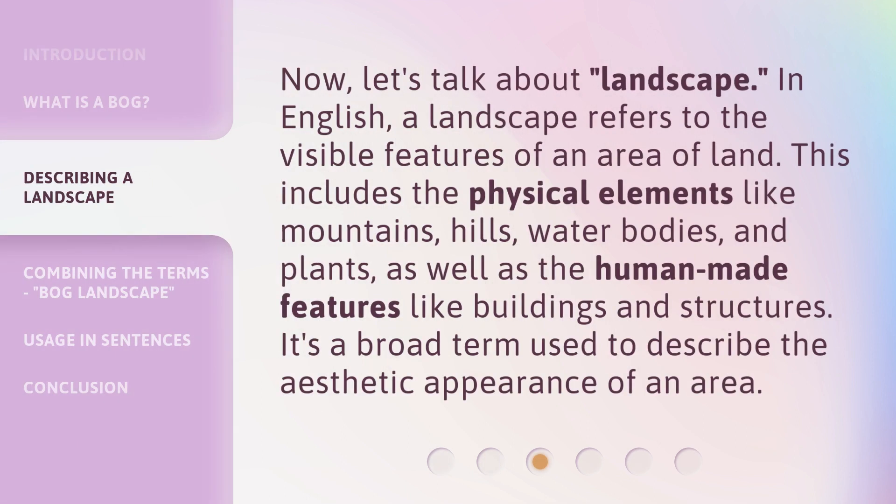Now, let's talk about landscape. In English, a landscape refers to the visible features of an area of land. This includes the physical elements like mountains, hills, water bodies, and plants, as well as the human-made features like buildings and structures. It's a broad term used to describe the aesthetic appearance of an area.